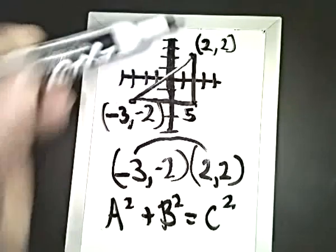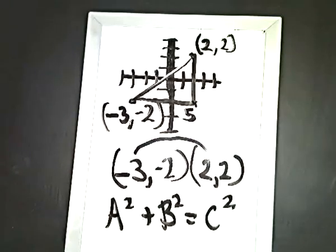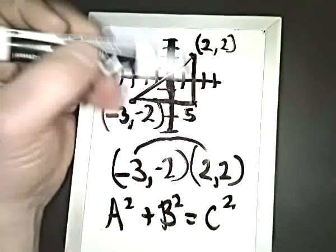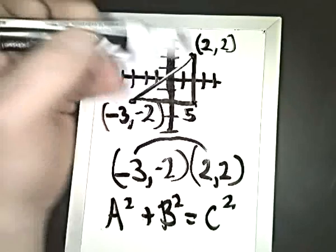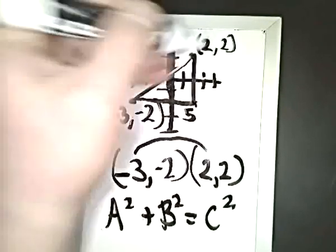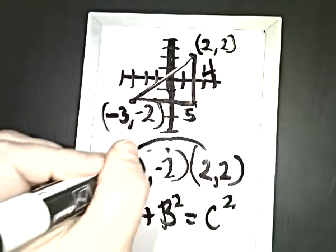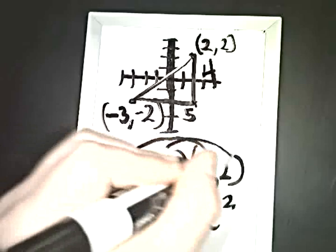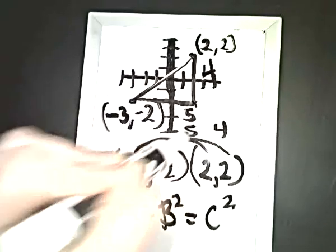Our vertical distance from here to here goes from negative two to positive two. Negative two to zero is two. Zero to two is two also. Two plus two is four. Or you can just count negative one, zero, one, two. And that will get you up to four. So this distance is four. However, showing down here, negative two to two would give you four. Negative three to two gives you five.